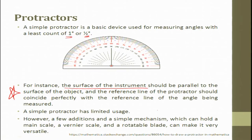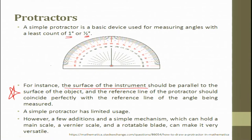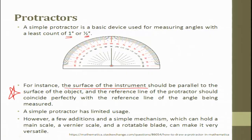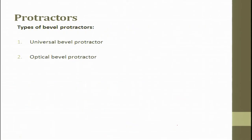Simple protractors have many limitations. However, adding a main scale, a vernier scale, and a rotatable blade makes it very versatile. Generally with a protractor we make a reference dot on paper, match the references, and draw. However, drawing a tangent on an arc is very difficult since a scale can only contact a curved surface at a point. To overcome this, we attach a main scale, vernier scale, and rotary blade for versatile applications.